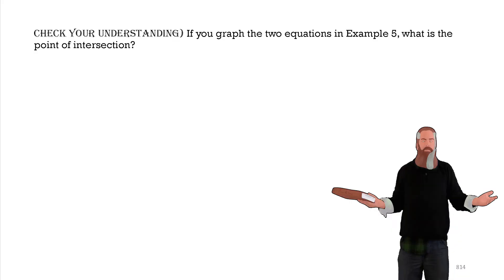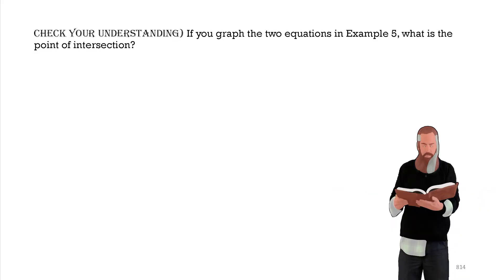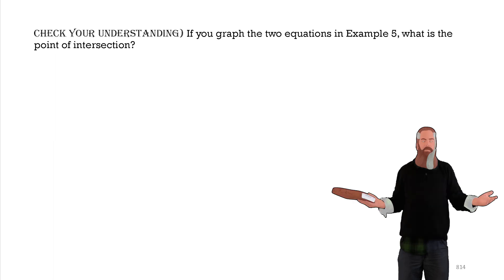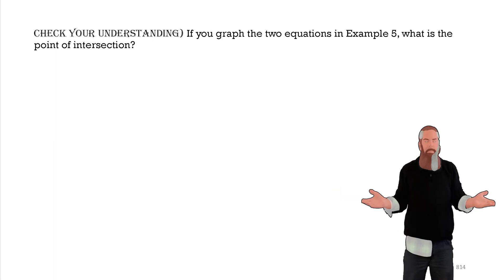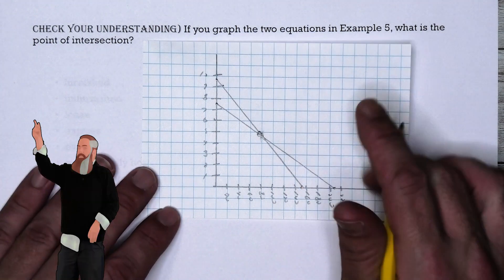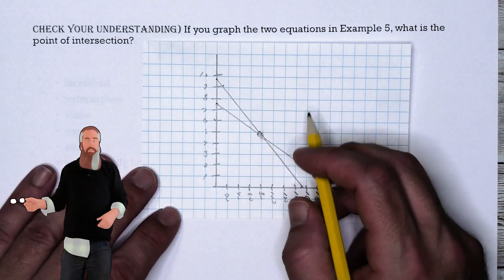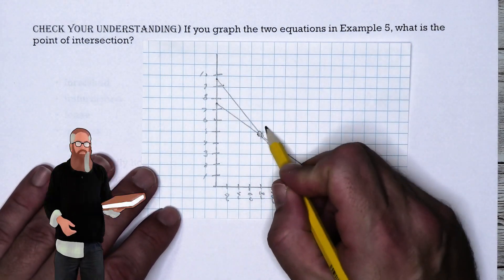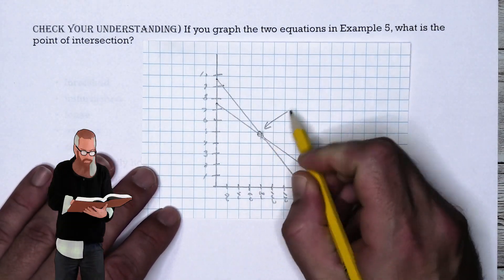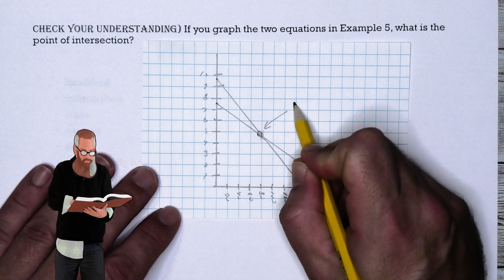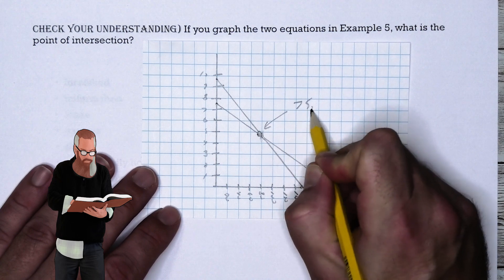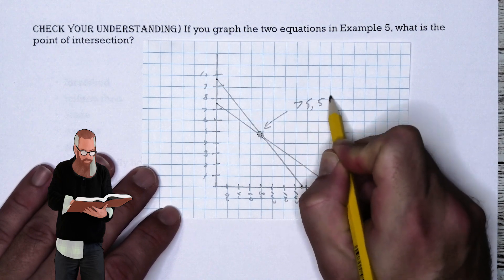Let's check our understanding. If you graph the two equations from example five, the point of intersection is approximately (75, 5), confirming both lines meet at that solution.